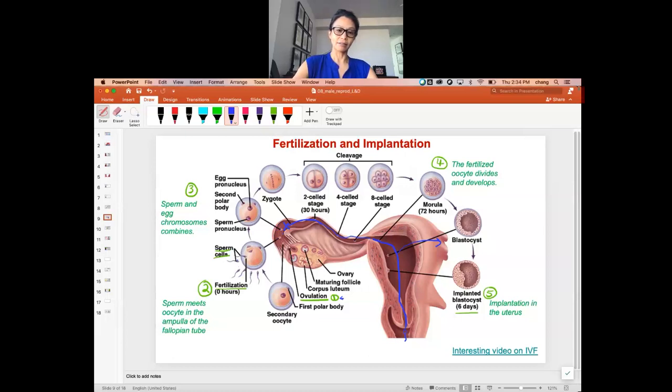Once the sperm enters the egg, the egg is now fertilized. When that egg gets fertilized, now it has the DNA from the male, from the sperm, and DNA from the female in the egg.